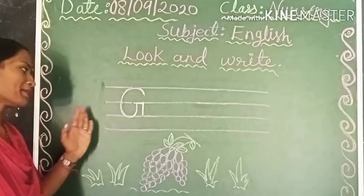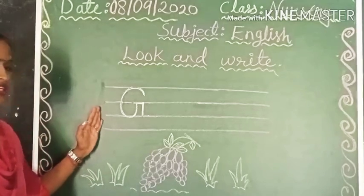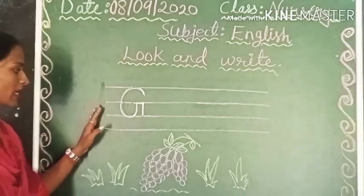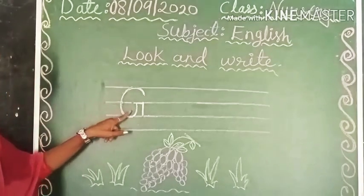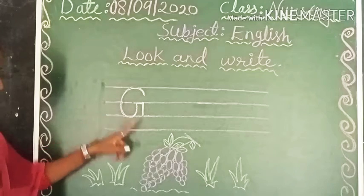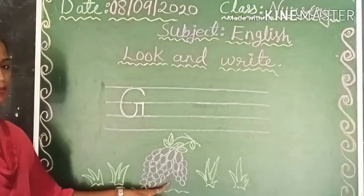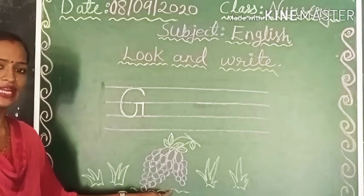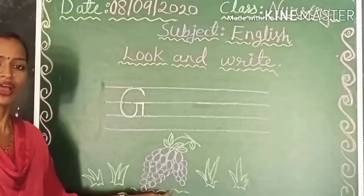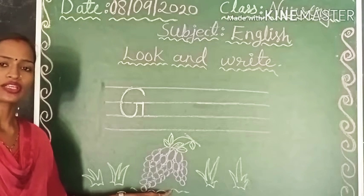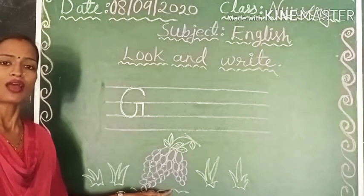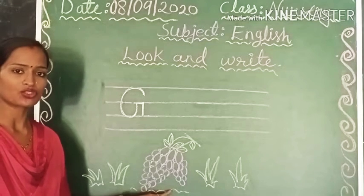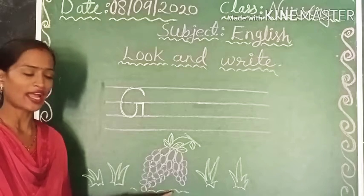तैयार, your capital letter G is ready. G for grapes, G for grapes. Grapes means अंगूर — क्या होता है? अंगूर।